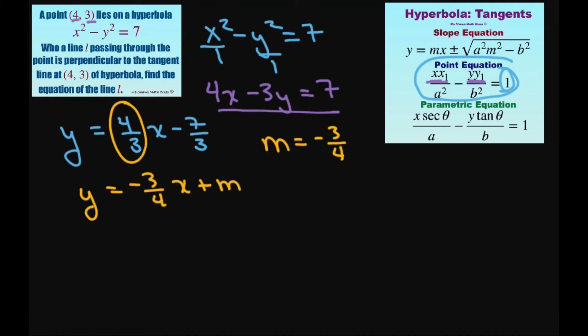Alright, from there the line passes again through this point (4, 3). So substituting in our point (4, 3) we're going to get 3 equals negative 3 fourths times 4 plus m. And so the fours will cancel and then you have 3 equals negative 3 plus m. So our slope is 6. Our m is 6.